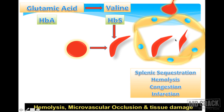Initially there will be splenomegaly from workload hypertrophy. But as time advances, sickling continues and there is more and more congestion of splenic sinusoidal spaces. Later, sickled RBCs can totally block the blood supply to various organs. The spleen can undergo infarction, and as splenic infarction continues, it undergoes a condition called autosplenectomy. So initially there is splenomegaly in sickle cell anemia, but as disease advances the spleen undergoes autosplenectomy due to infarction.